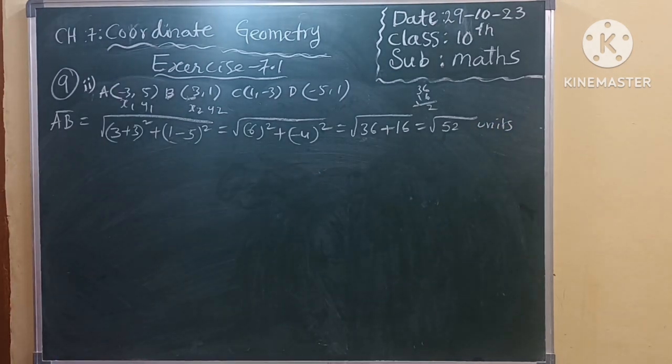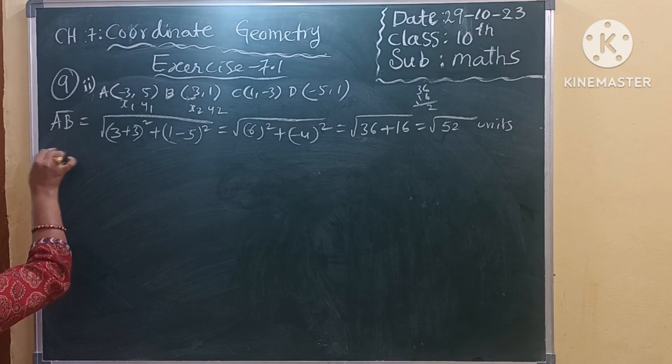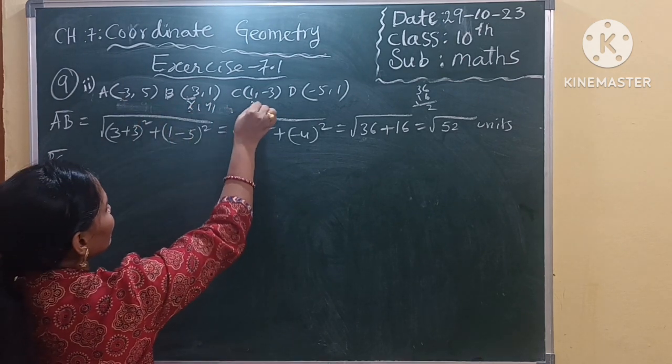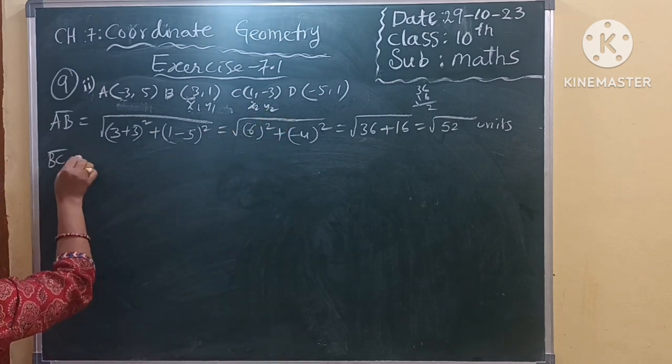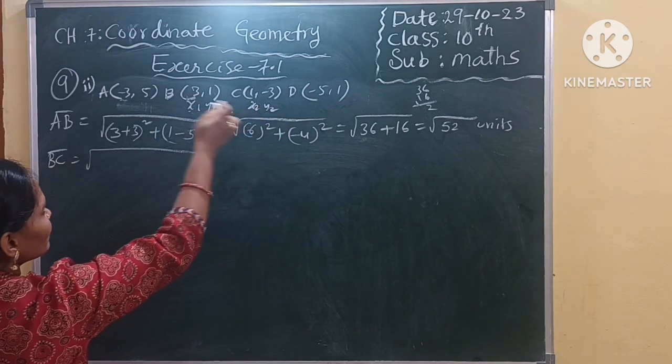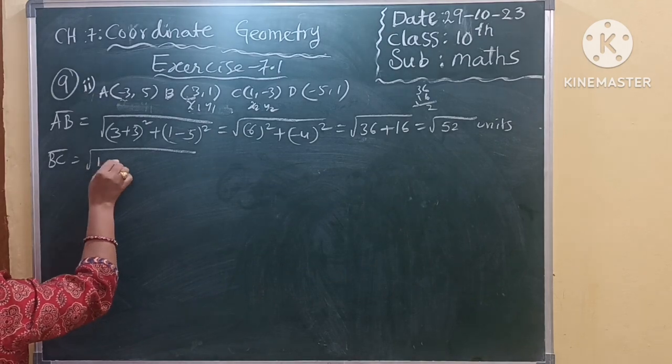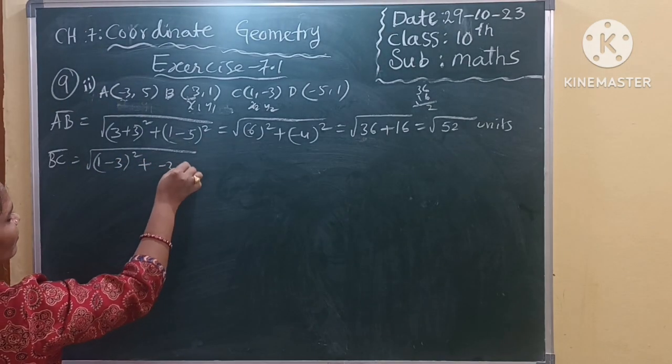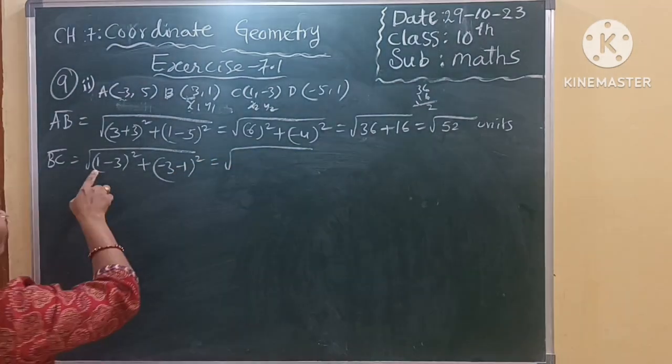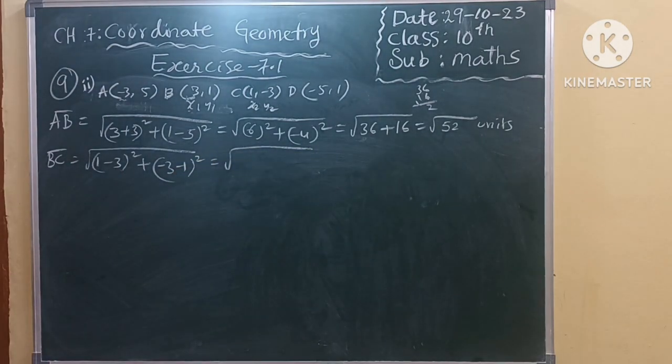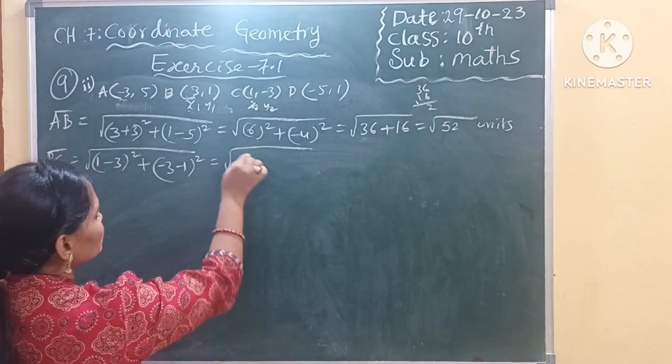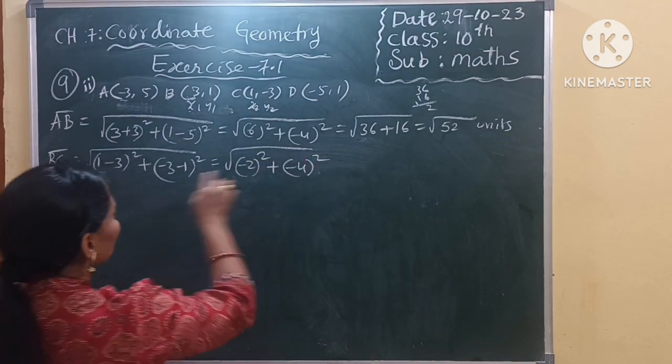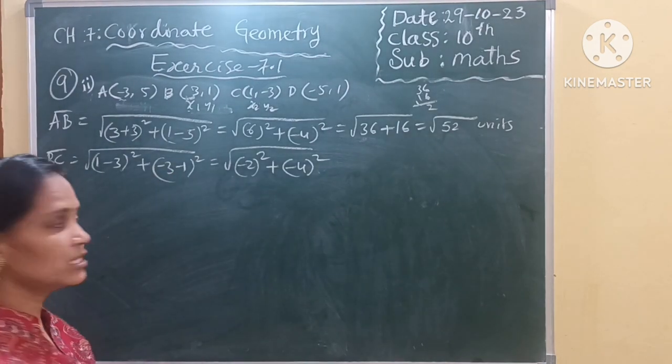Now similar way BC distance also we should find. So X1, Y1, X2, Y2. Square root of X2 minus X1. So 1 minus 3 whole square plus Y2 minus Y1 whole square. 1 minus 3 will use minus 2 whole square. Minus 3 minus 1 will use minus 4.